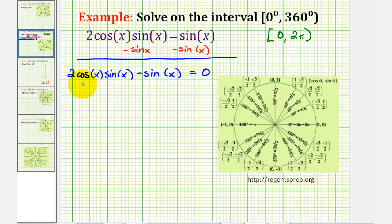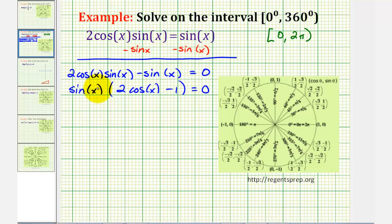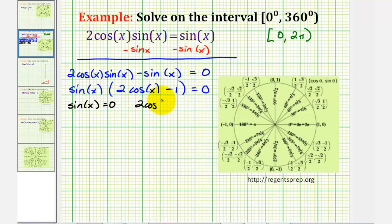In this form, we can factor out sine x from both terms, giving us sine x times the quantity two cosine x minus one equals zero. Notice if we distribute, we still have two cosine x sine x minus sine x. But now that this is factored, if this product is equal to zero, then either sine x equals zero, or the second factor, two cosine x minus one, must equal zero. So we can find our solutions using these two equations.